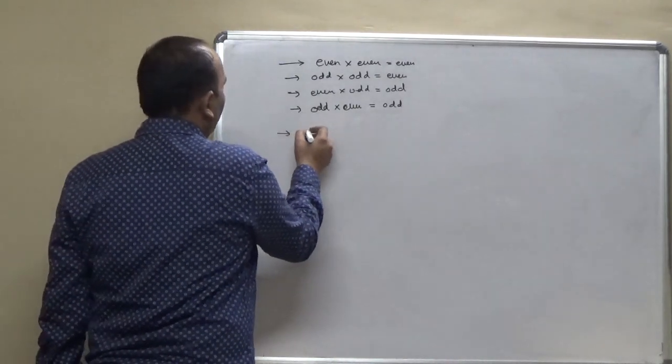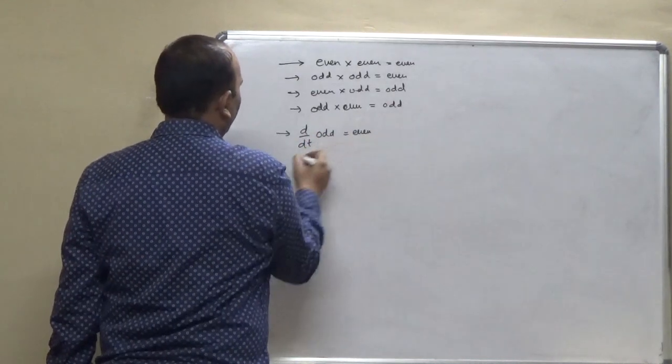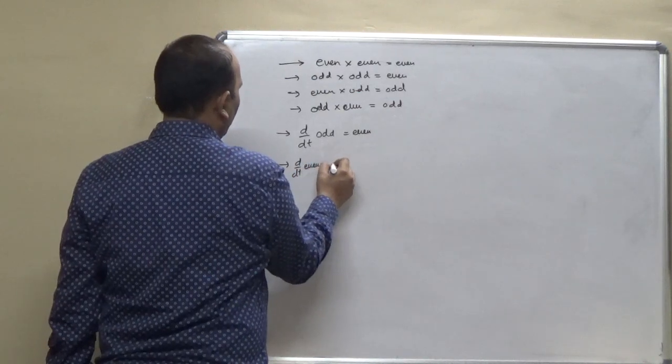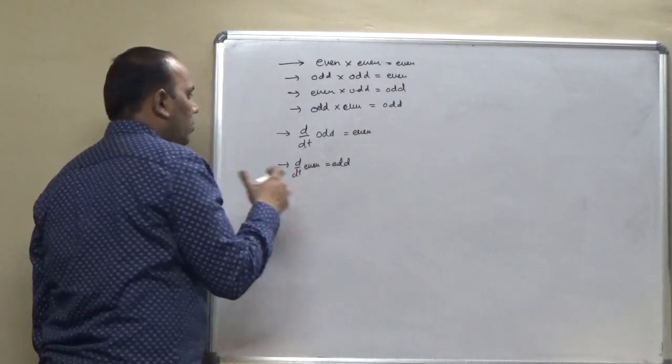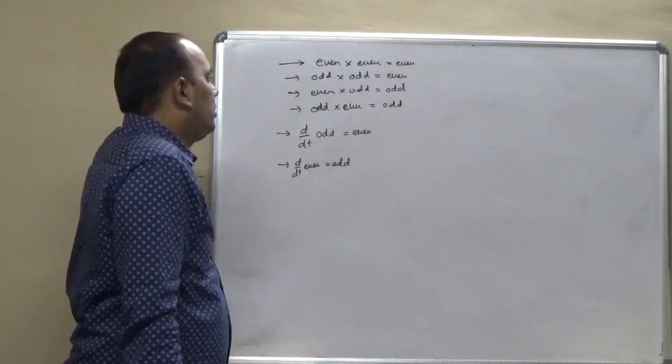And differentiation of odd signal, then you will get even. Differentiation of even signal, you will get odd. So, there is a vice versa relationship between all the even and odd signals.